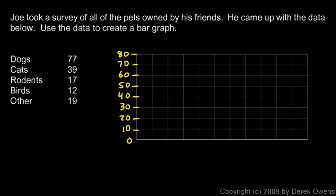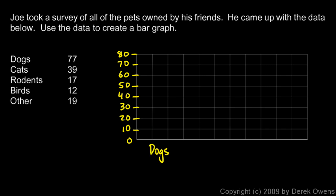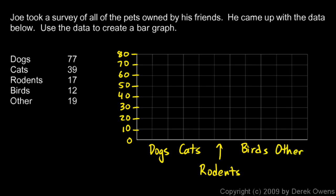Then down here on the horizontal part, we'll list the different categories: dogs, cats, rodents, birds, and other. So in this column right here, I'm going to graph the number of dogs. I'll write dogs here, and skip a space just to keep the graph neat, and I'll put cats here, then rodents, then birds, and other over here. I just wrote the word rodents down here because I could tell I was going to have trouble fitting it in this space.